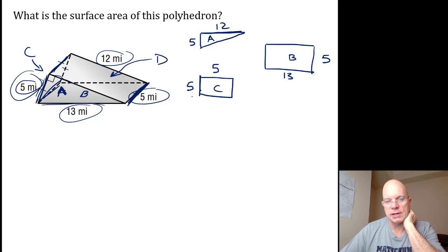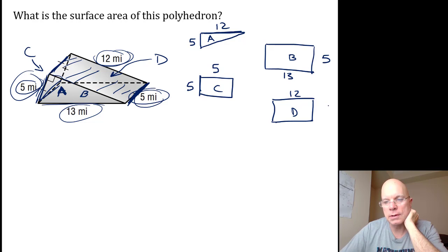And rectangle D—that face, this rectangle—is a 12 by 5. So I've drawn them inconveniently. I'll do the area of triangle A first.